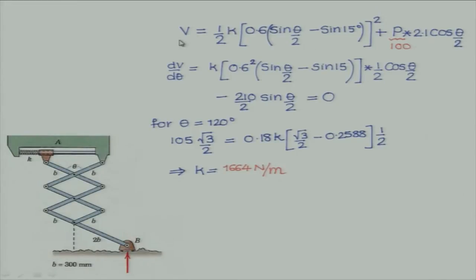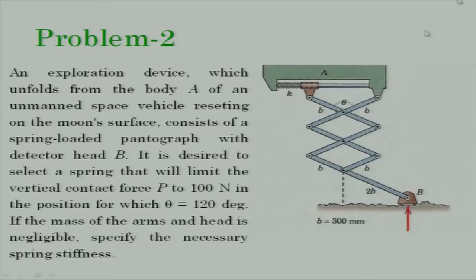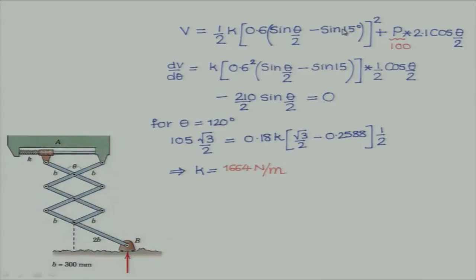The spring length as a function of theta is 2B·sin(θ/2). The initial length is at theta equal to 30 degrees, so 2B equals 0.6 m. The spring potential energy is then: ½k × [0.6·(sin(θ/2) − sin(15°))]². This is the extension of the spring times the stiffness. We should not substitute theta equal to 120 degrees yet — we need to differentiate first and find the equilibrium position.